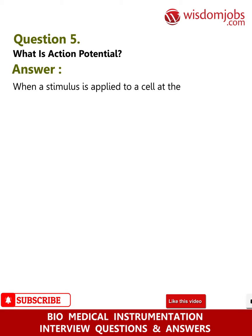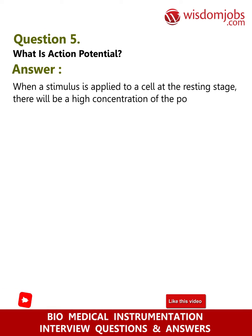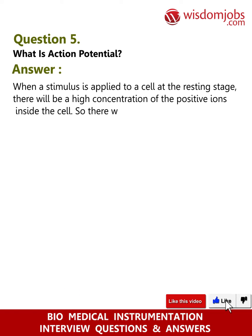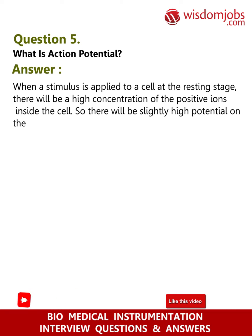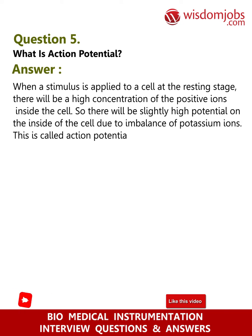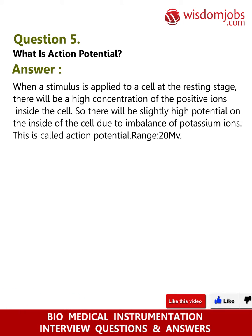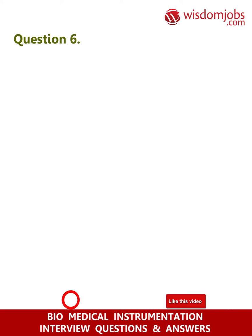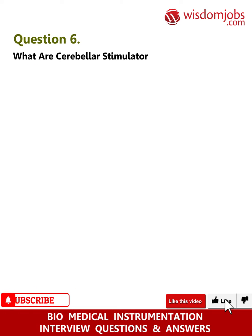Question 5: What is action potential? Answer: When a stimulus is applied to a cell at the resting stage, there will be a high concentration of positive ions inside the cell, so there will be a slightly high potential on the inside of the cell due to an imbalance of potassium ions. This is called action potential. Range: 20 mV.